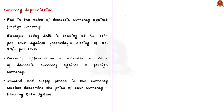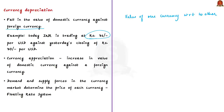Before knowing about currency depreciation, we should know about currency exchange rate. Currency exchange rate refers to the value of one currency with respect to another — for example, the value of Indian rupee to the US dollar. Currency depreciation means a fall in the value of domestic currency against foreign currency, meaning domestic currency can buy fewer units of foreign currency than earlier. For example, if today INR is trading at ₹71 per USD against yesterday's closing of ₹70, that means INR has depreciated by ₹1 per USD.